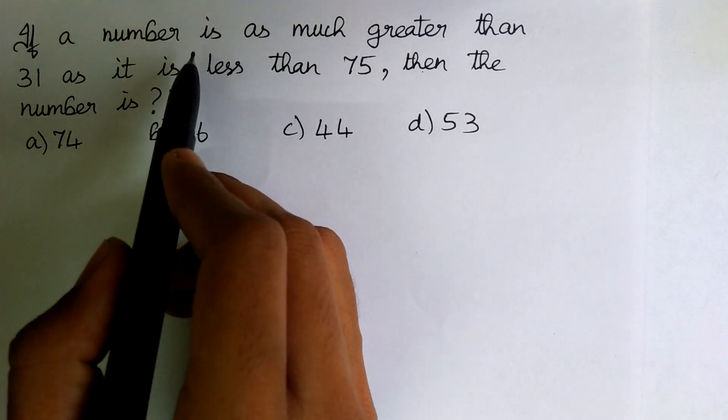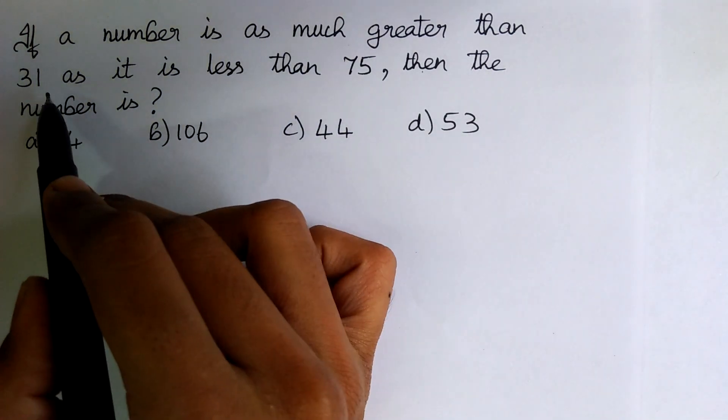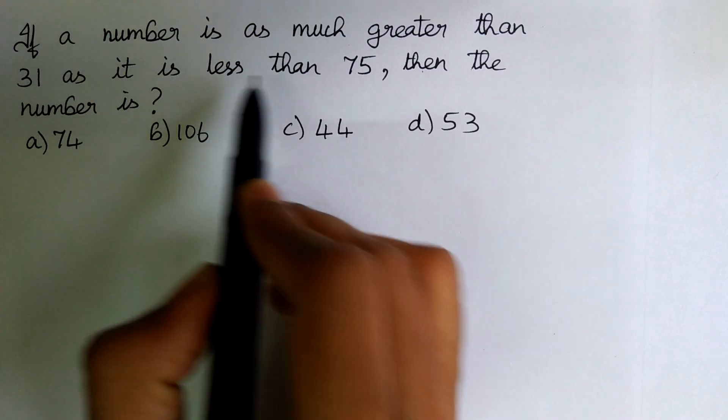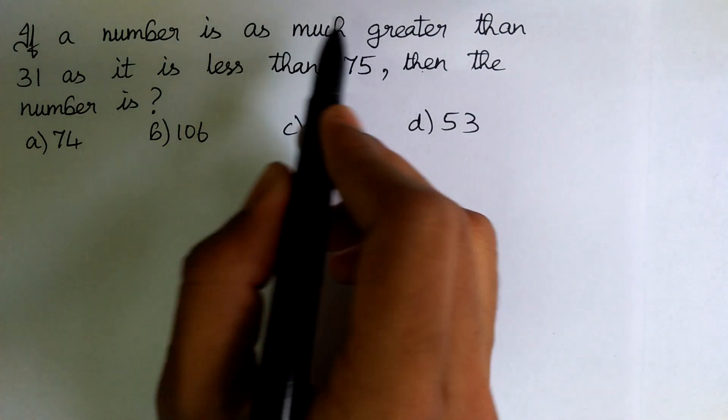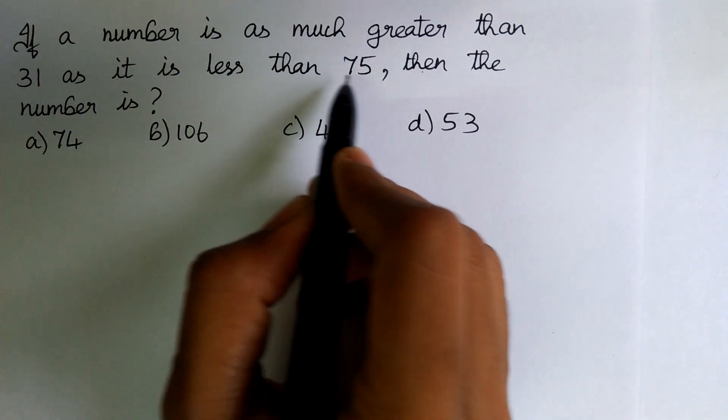Here watch carefully. It is given that the number is as much greater than 31 as it is less than 75. That is, it is equally greater than and equally less than 31 and 75.